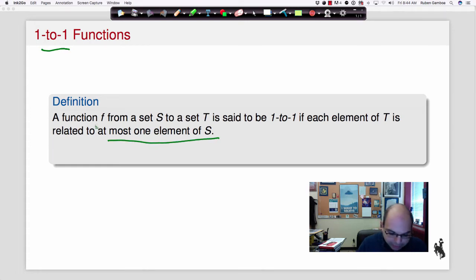So we have a function f that goes from s into t. And if it's one-to-one, each element of t is associated with more than one element of s. I'm emphasizing that because remember that f is a function if each element of s is associated with at most one element of t.